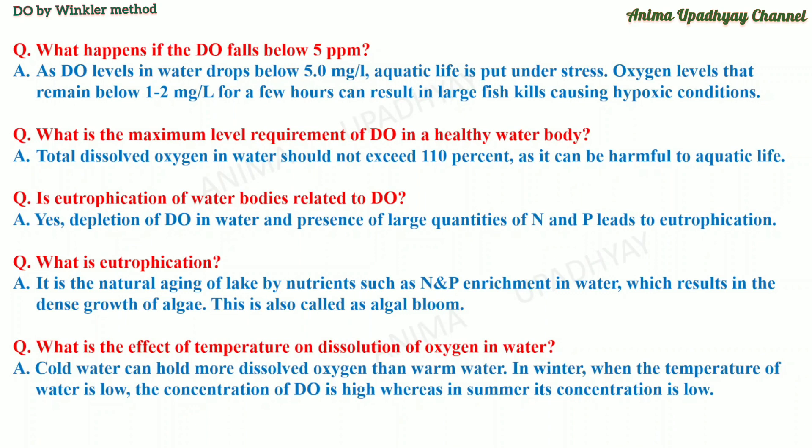Is eutrophication of water bodies related to D-O? Yes, depletion of D-O in water and presence of large quantities of nitrogen and phosphorus leads to eutrophication. What is eutrophication? It is the natural aging of a lake or water body by nutrients such as nitrogen and phosphorus enrichment in water, which results in the dense growth of algae, also called algal bloom.